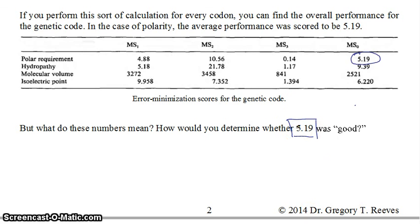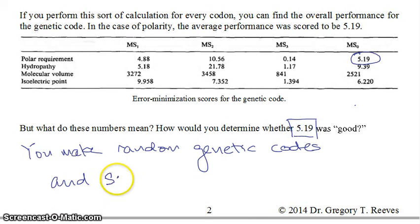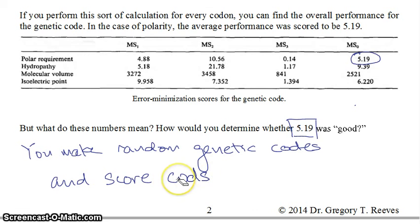The way you determine if the score is good is that you make random genetic code assignments and score those in the same way that you scored the natural genetic code. So the researchers made random genetic codes and scored those codes using the same method.